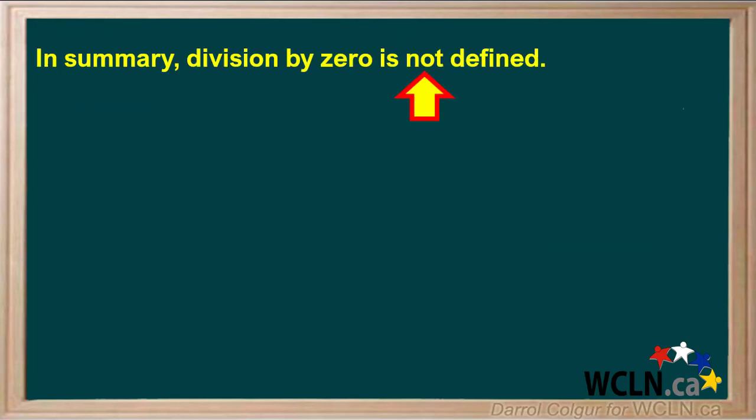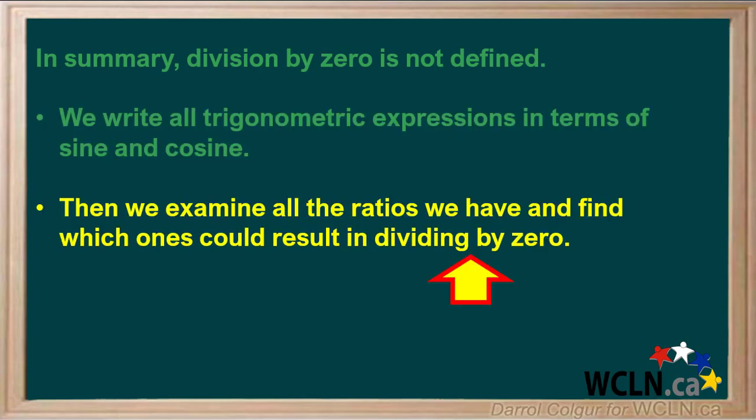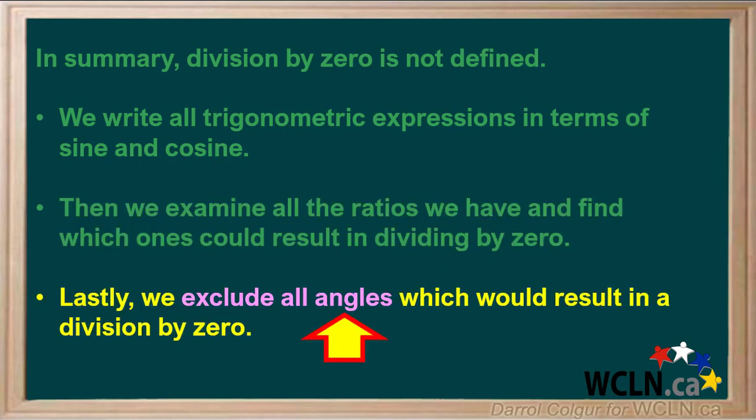In summary, division by zero is not defined. We begin by writing all trigonometric expressions in terms of sine and cosine. Then we examine all the ratios we have and find which ones could result in dividing by zero. Lastly, we exclude all angles which would result in a division by zero.